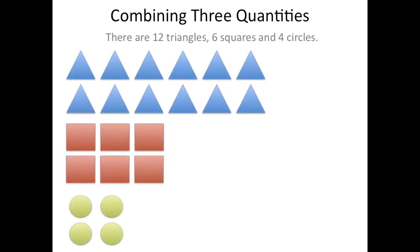There are 12 triangles, six squares, and four circles here. I'd like to show the ratio of triangles to squares to circles. If we were to count these all up we'd see that we have 12 triangles, six squares, and four circles.